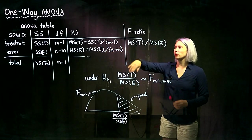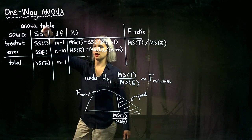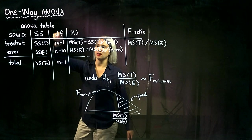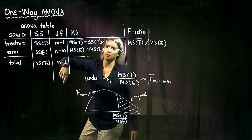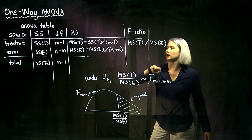The way it works is we have a column for the source of variability, a column for the sum of squares, a column for the degrees of freedom, a column for the mean squares, and then finally our test statistic.